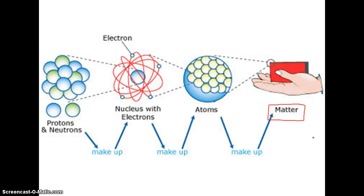The technical definition of matter is anything that has mass and anything that takes up space. It doesn't really matter if that mass is really really tiny, and it doesn't matter if the space it takes up is really tiny. As long as it has some sort of mass and takes up some sort of space — in other words, has some sort of volume — we say that it is classified as matter.